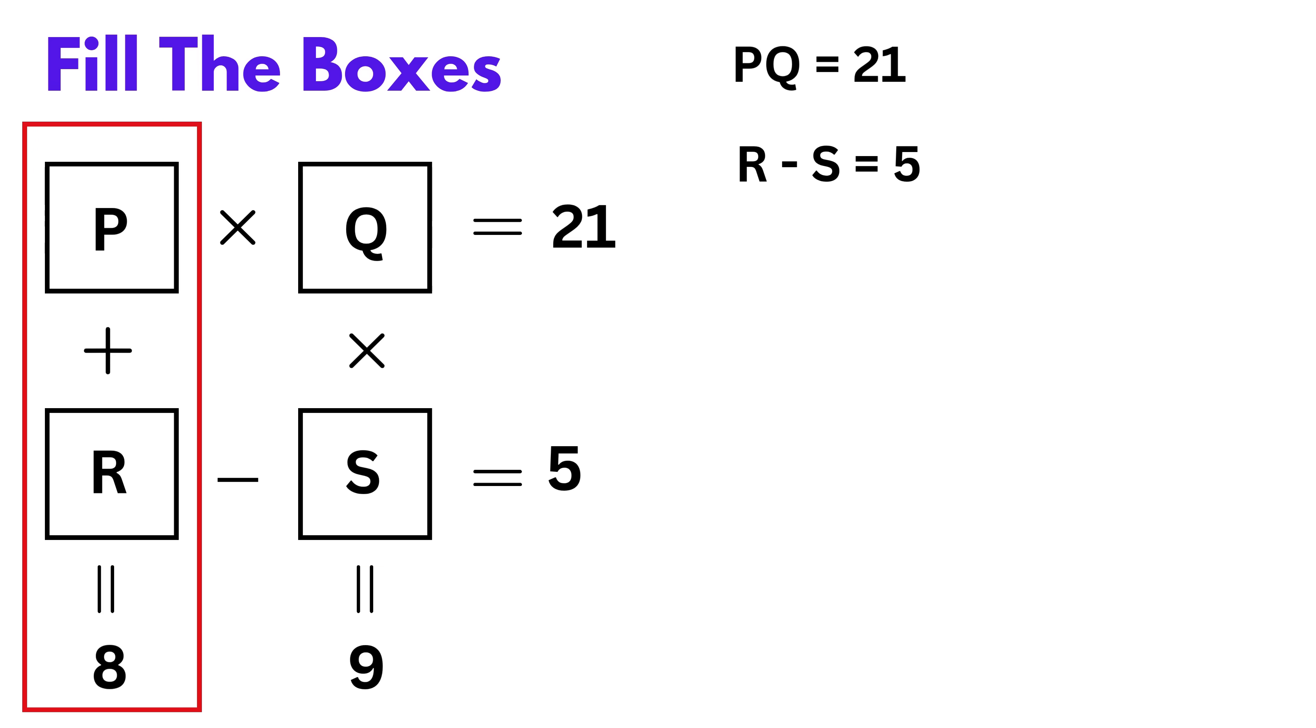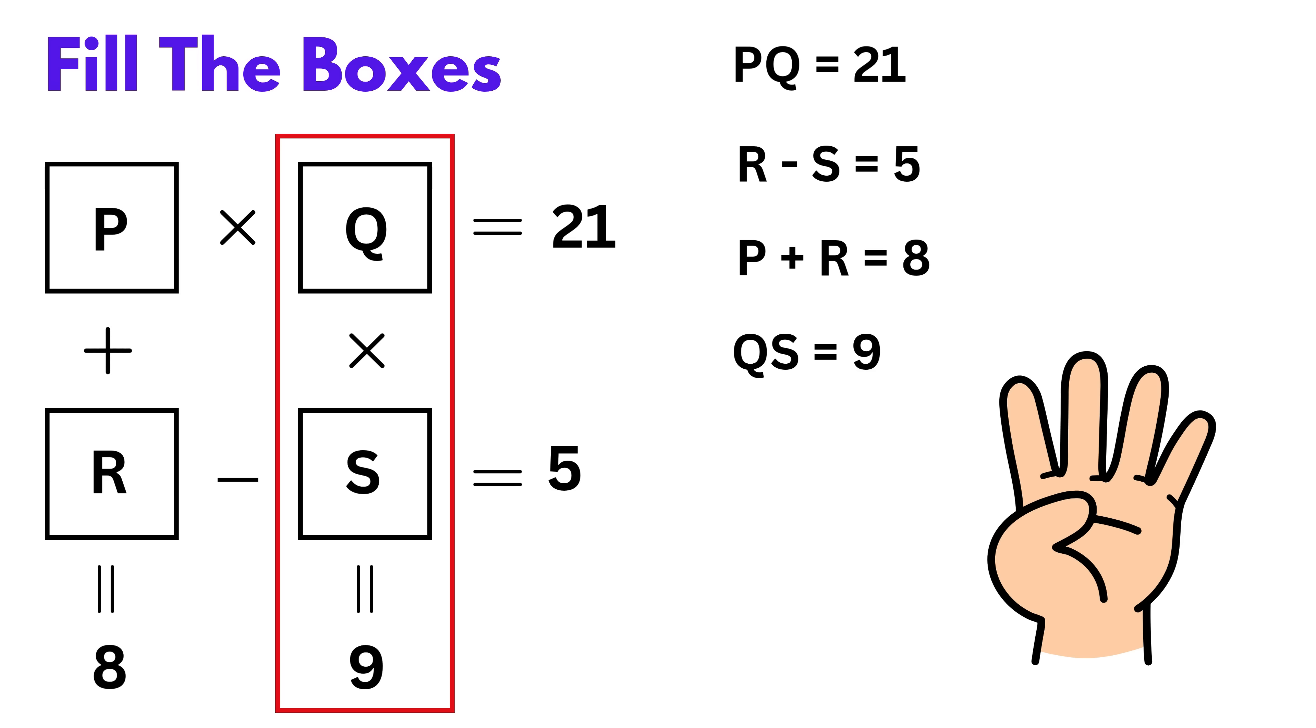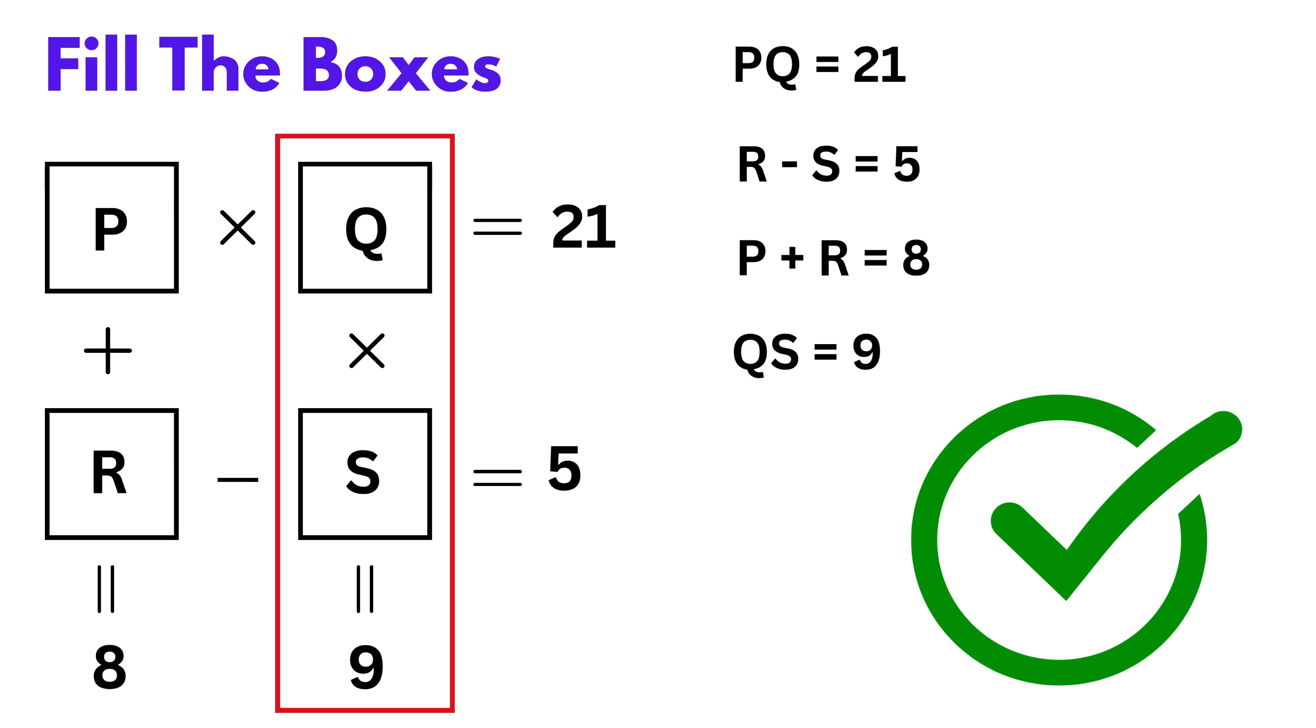Now move to the first column going down. P plus R is 8. And finally, look at the second column going down. Q times S is 9. Wow! So now we have four equations and four unknowns, which means we can solve this.